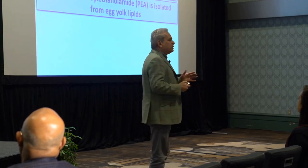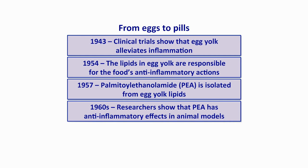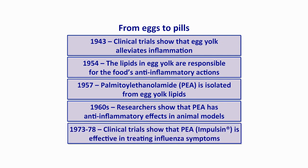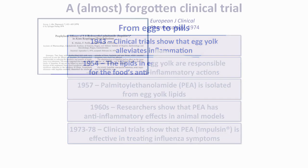Not much happened after that. A few papers in the 1960s continued to confirm the anti-inflammatory effect of PEA. But the big moment was in the 1970s, between 1973 and 1978, in the then country of Czechoslovakia, where a company called PUFA developed PEA for the treatment of influenza symptoms. They called it Impulsin, and they ran several clinical trials with it.